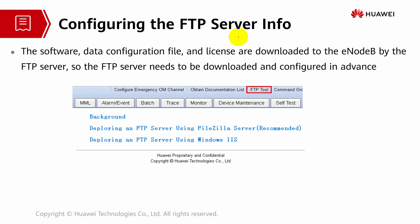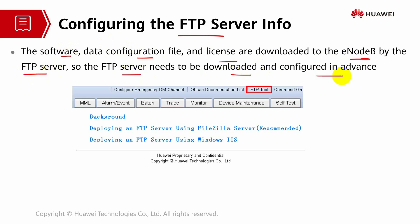Configuring the FTP server info. FTP server is important because in order for us to transfer the software, the configuration and even the license, we have to connect with an FTP server. The laptop that we use becomes the server and our client will be the UMPT card, the base station itself. The software, data configuration and license will be downloaded to the eNodeB by using the server.